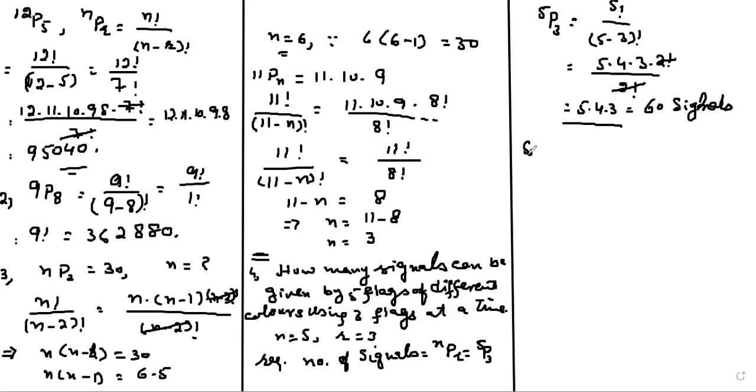Calculate 12P7. So the question is 12P7. We can use it by using the permutation formula 12 factorial divided by 12 minus 7 factorial. This will be 5 factorial.